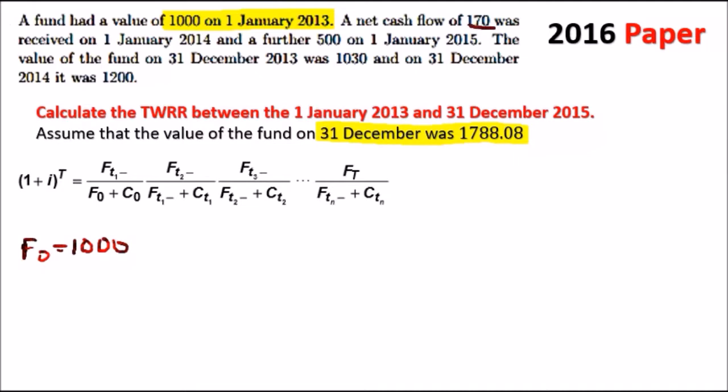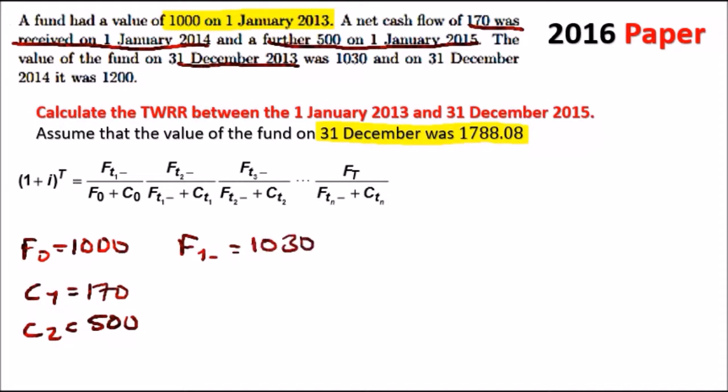Next one, the net cash flow of 170 was received on the 1st of January, one year later, in 2014. So cash 1 was 170. And again, a further 500 a year later, so cash 2 equals 500. Now, this is the important part. The value of the fund on the 31st of December 2013, the end of the first time but one day back. We call this F1 minus or T1 minus. This would reflect this cash, and the fund here was 1,030. And again, one year later, it was 1,200. So F2 minus was 1,200.